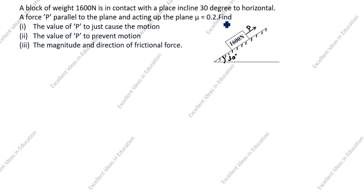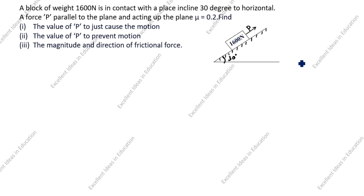We need to find: first, the value of P to just cause the motion; second, the value of P to prevent motion; and third, the magnitude and direction of the frictional force. We will start by drawing the free-body diagram.